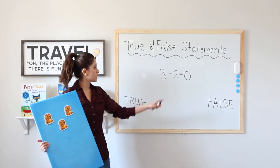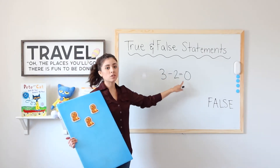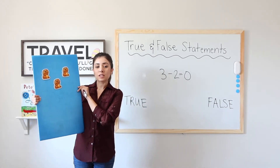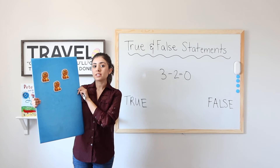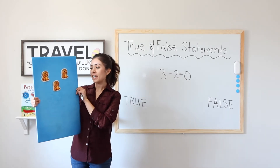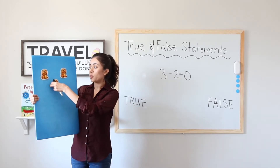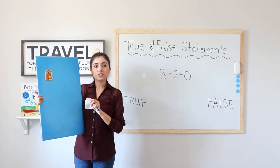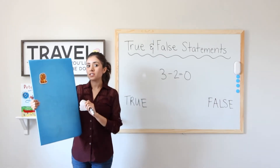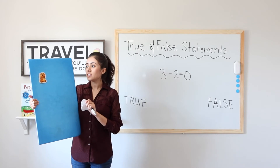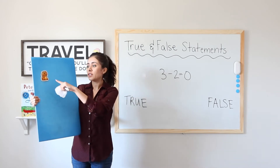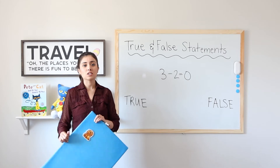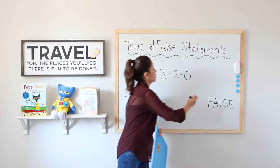Our next problem: 3 minus 2 equals 0. I have 3 dogs playing at the park. 2 dogs decide it's time to go home and take a nap — 1, 2. Do I have 0 left? Remember, 0 means none. Are there no dogs left? That is not true — there is 1 dog left. So this statement is also false.